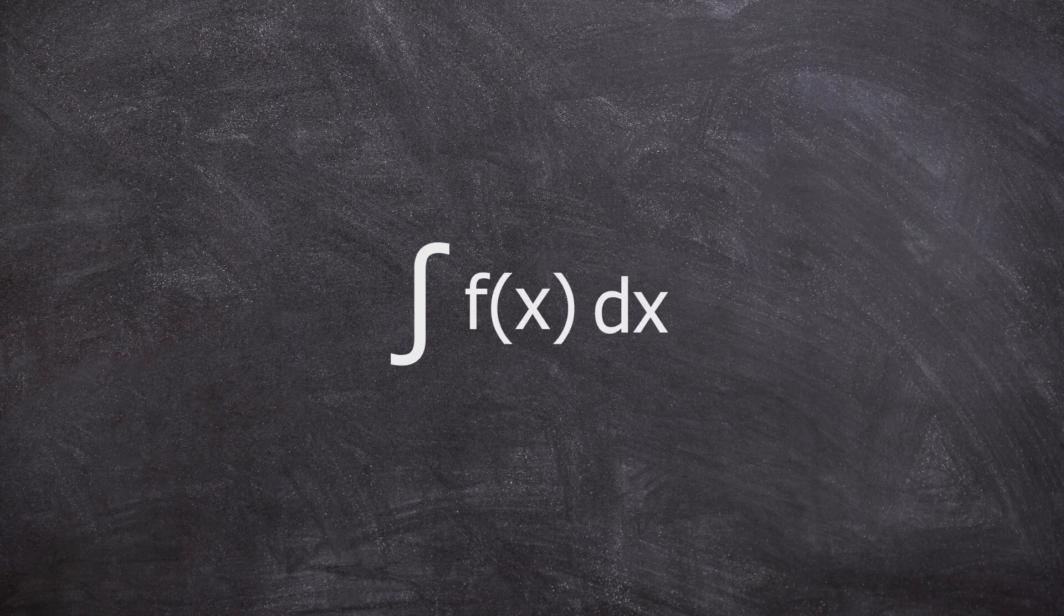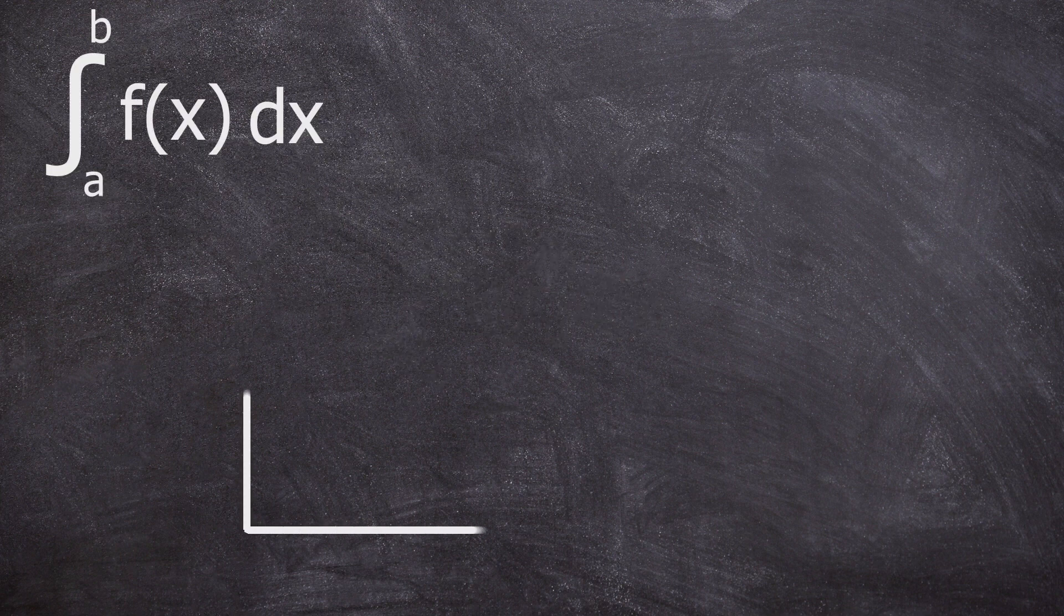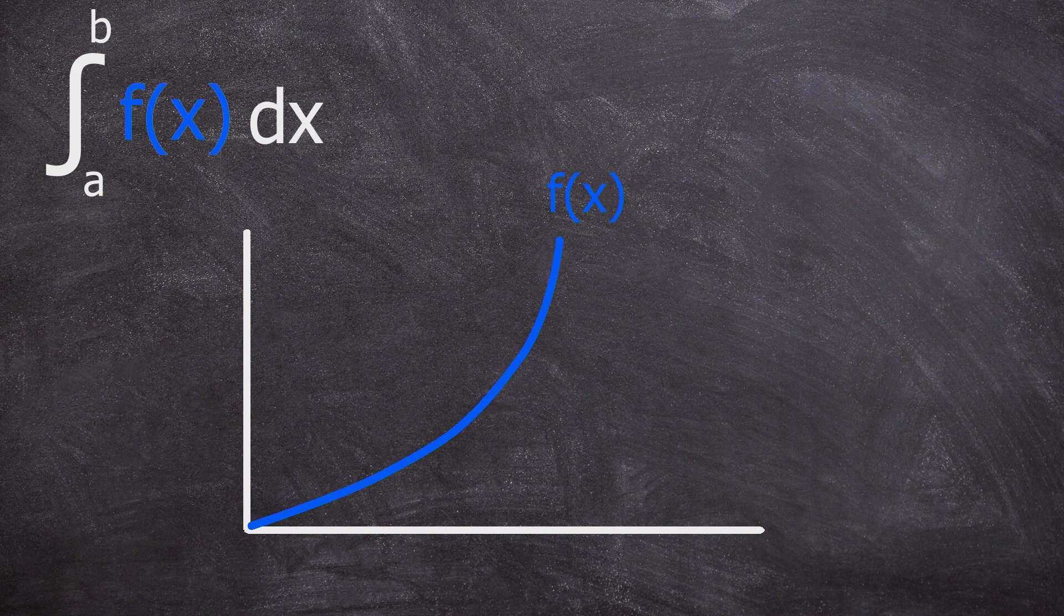A definite integral is described by the following formula, where f of x is a function and a and b are the limits. This can be visualized on a plot like this. The meaning of a definite integral is actually the area under the graph between a and b.